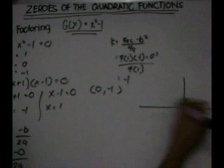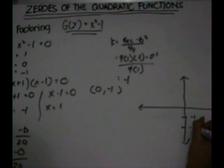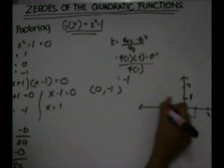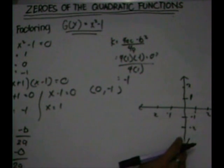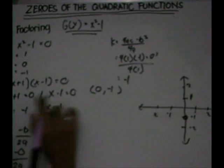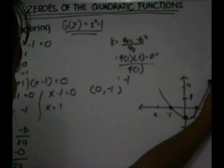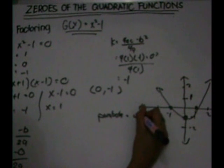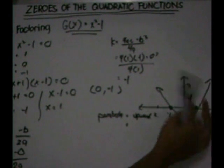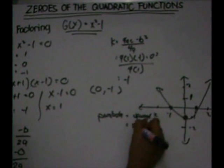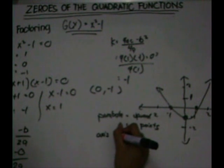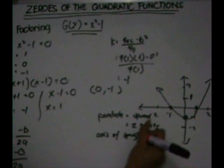The next thing we're going to do is to graph this. We'll plot the points: the vertex here, and the two x-intercepts, negative one and one. We'll plot the parabola. The parabola of our equation is directed upward. It passes through two points, and the axis of symmetry will be zero.